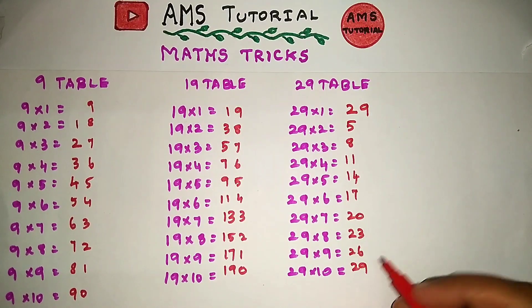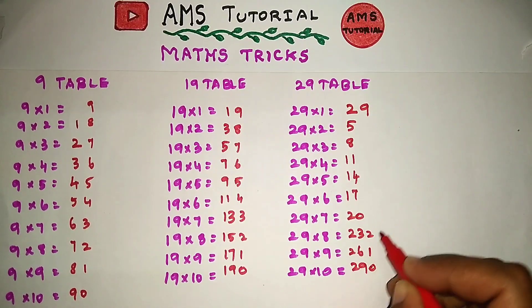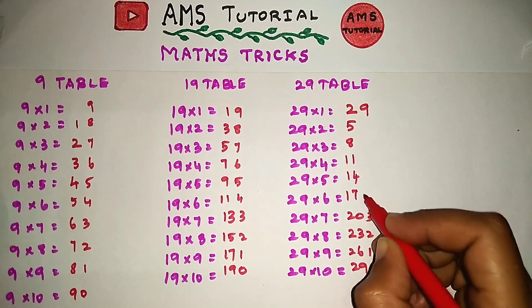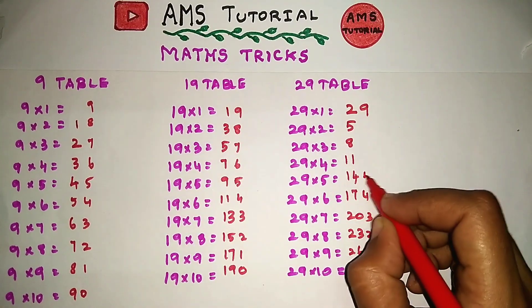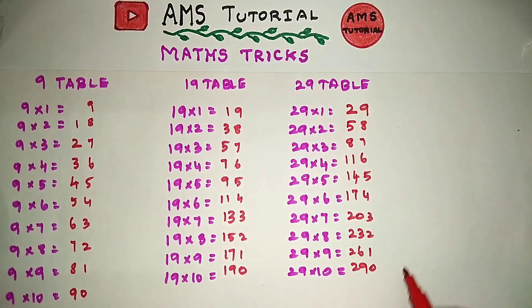Now, let's reverse it. 0, 1, 2, 3, 4, 5, 6, 7, 8.